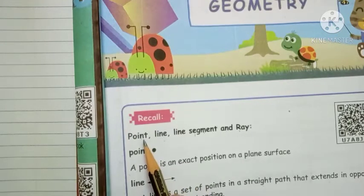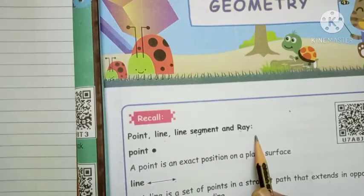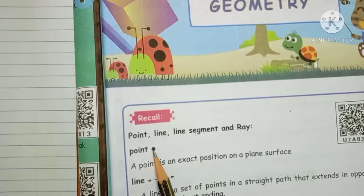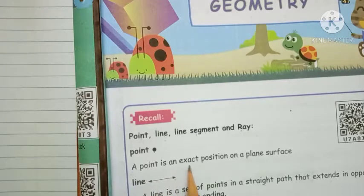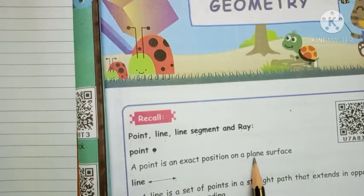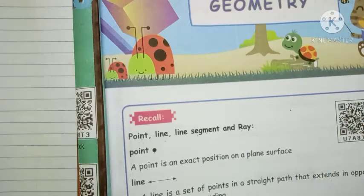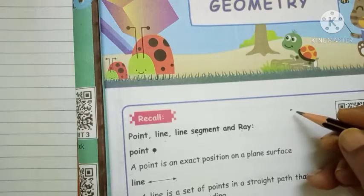Let's start now. The topics are: point, line, line segment and ray. A point is indicated by a dot — you put a dot. That is called a point. A point is an exact position on a plane surface — an exact position on a plane surface. Here on this page, I place a dot, and this is called a point. P-O-I-N-T, point.